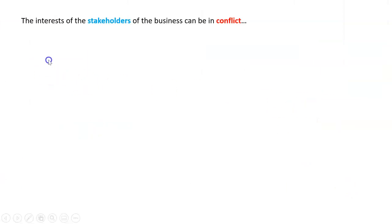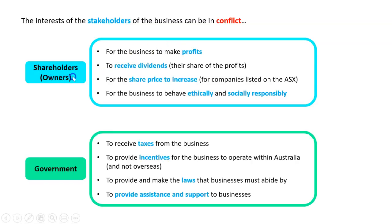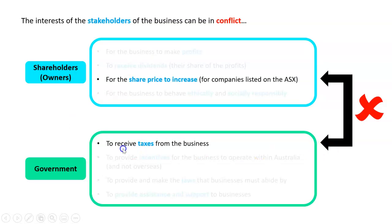A final example — and it could be any two stakeholders — let's take the conflict between shareholders or owners and the government, and it's a huge one. Governments want to receive taxes from the business so they can pay for schools, hospitals, roads, and so on. Whereas shareholders or owners want the share price to increase. One way a government could increase the taxes it receives is to slug a tax on business, maybe on its profits or a payroll tax on the number of employees. The shareholders aren't going to like that because it's going to lower profits, lower profits usually lower the share price, and they're going to lose money.